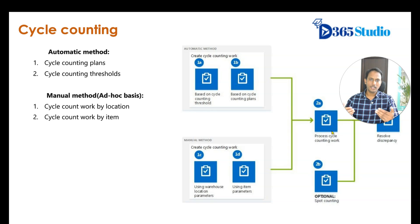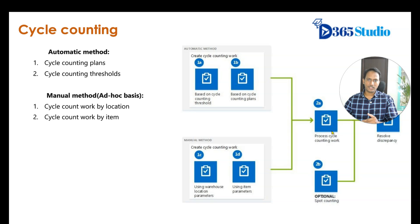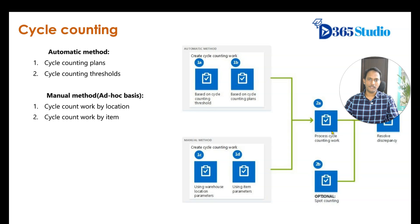In this case, the system showed 10, but when really counted it was 8. The reasons will be probed by the cycle counting supervisor, and once that is sorted out they will approve that cycle counting work. Once approved, the system will create a cycle counting journal — the standard counting journal — which gets posted in the system.